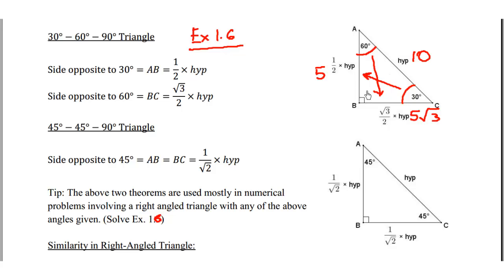So in a 30, 60, 90 triangle, if even one side is given, we can find the other two sides. For example, if 5 is given, we can find the hypotenuse is double that — which is 10 — and the side opposite to 60 degrees is 5√3.